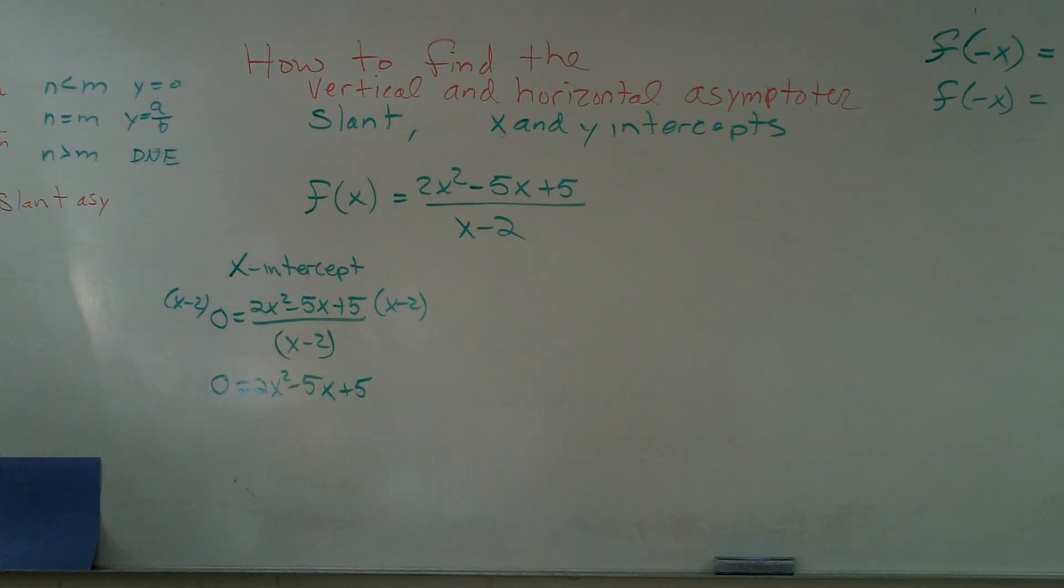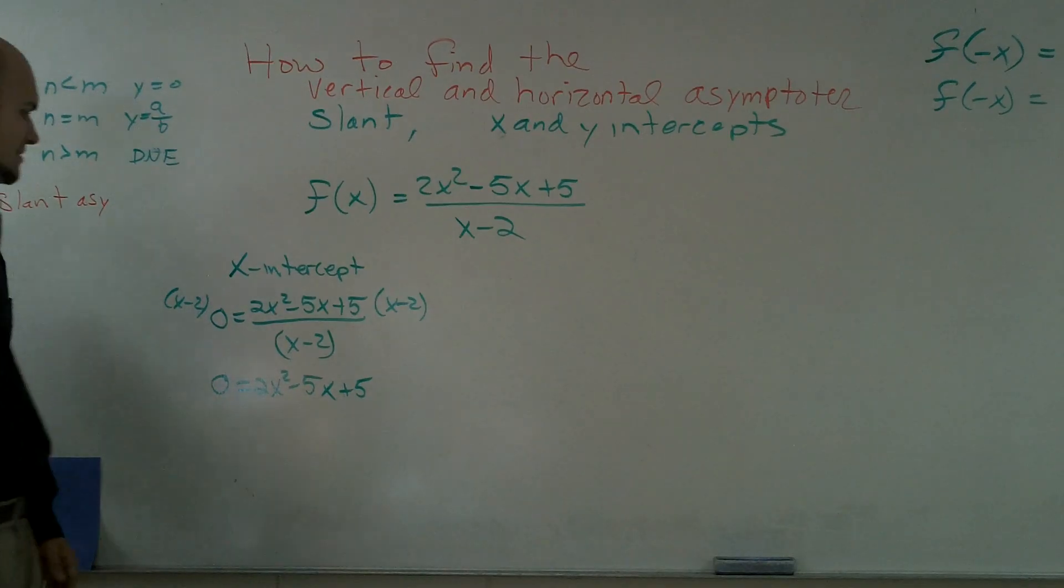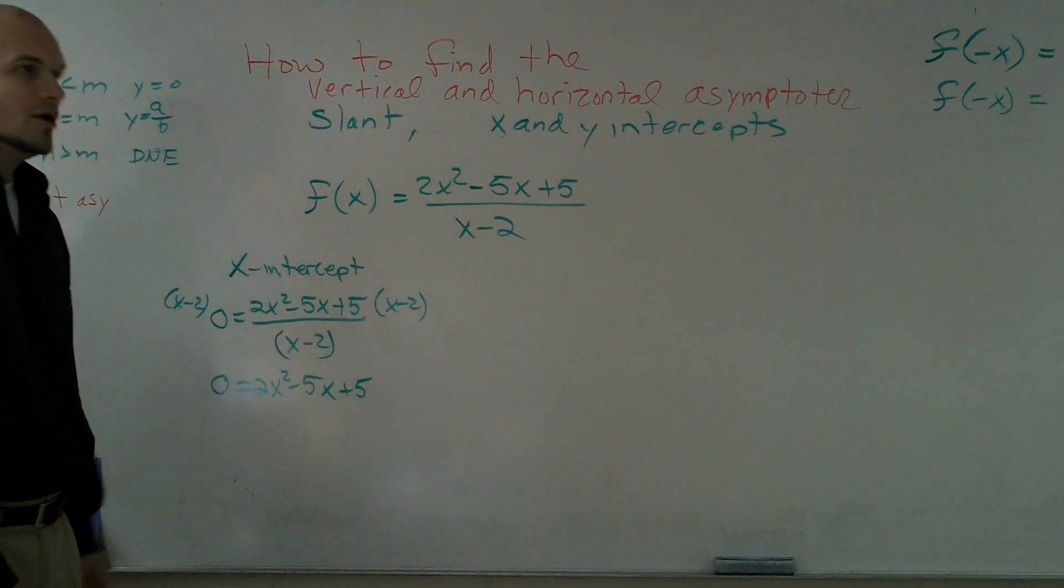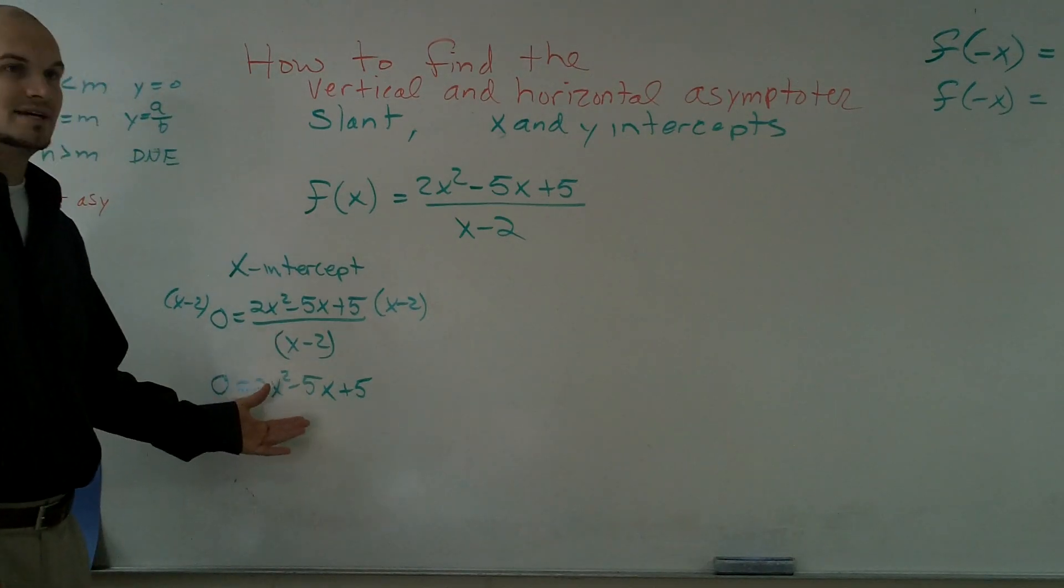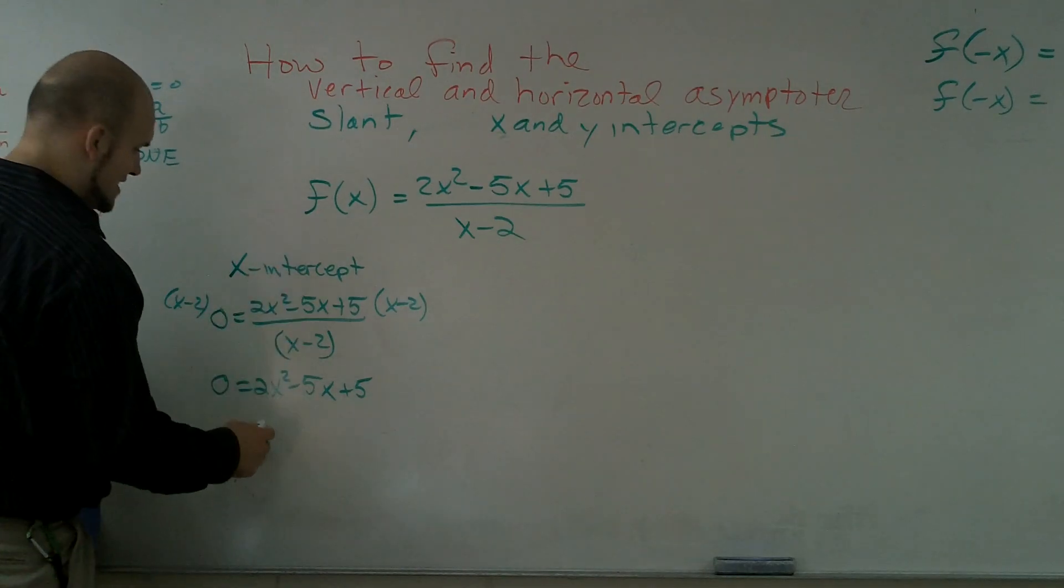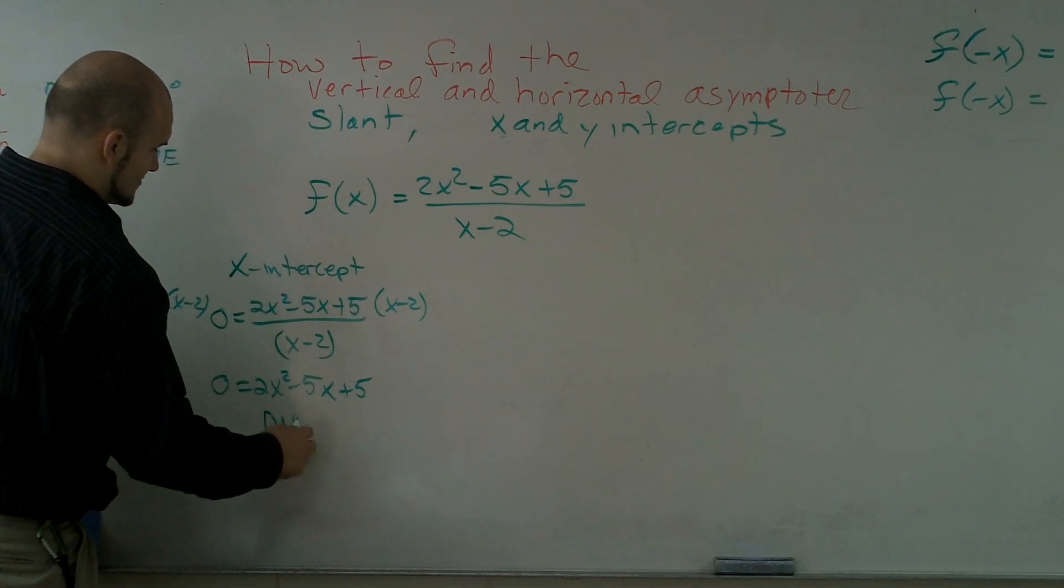And therefore I get 0 equals 2x squared minus 5x plus 5. If I remember correctly, this is not factorable. When I use the quadratic formula, it's going to have imaginary roots so therefore it's not factorable. So therefore my x intercept does not exist.